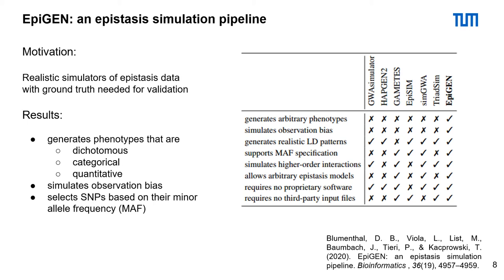You can see the features of EPIGEN in the table on the right side. EPIGEN is the only tool which can generate arbitrary phenotypes and simulate observation bias, and can faithfully reproduce many more characteristics of realistic data than other simulators.